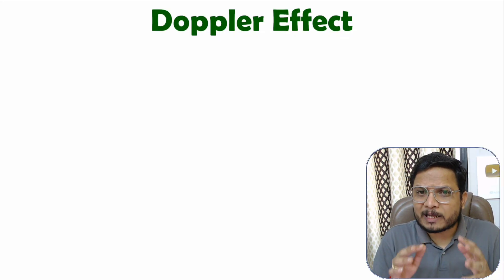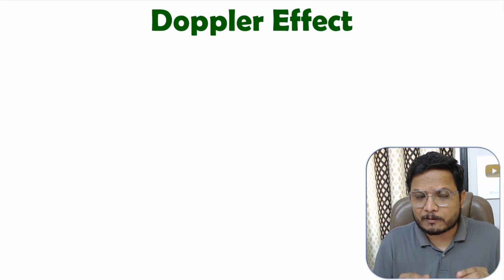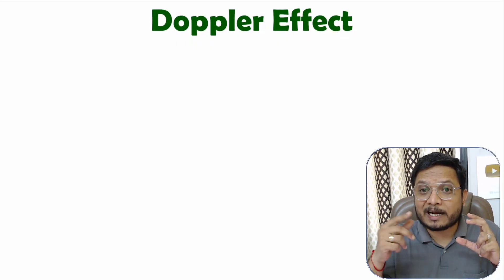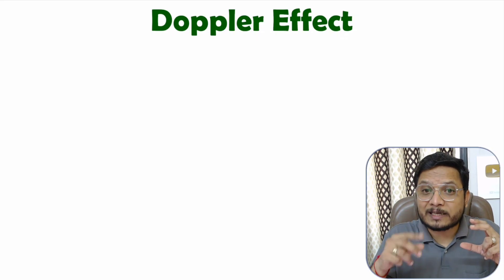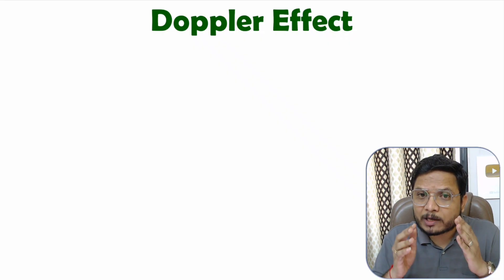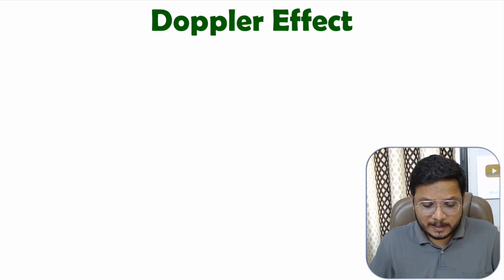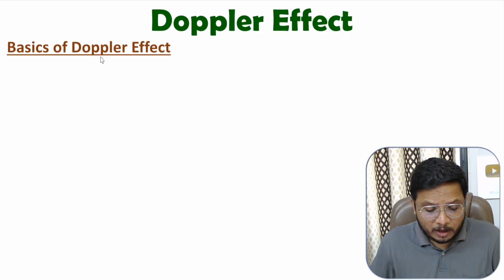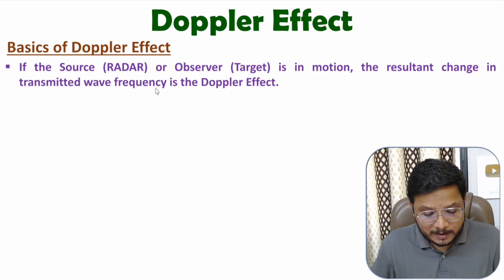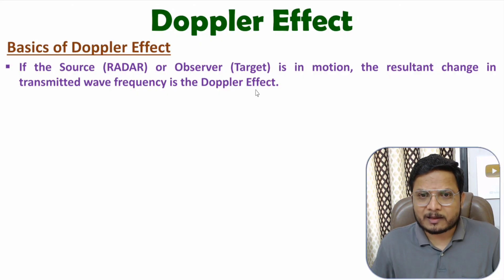In radar engineering, the Doppler effect plays a very essential role. Based on the Doppler effect, radar can identify the motion of the target. If the target is having some velocity, then velocity calculation can be done using the Doppler effect. The Doppler effect explains the motion of an object — if the source or observer is in motion, there will be a resultant change in the transmitted wave frequency. Let me explain that with a few case studies for more clarity.